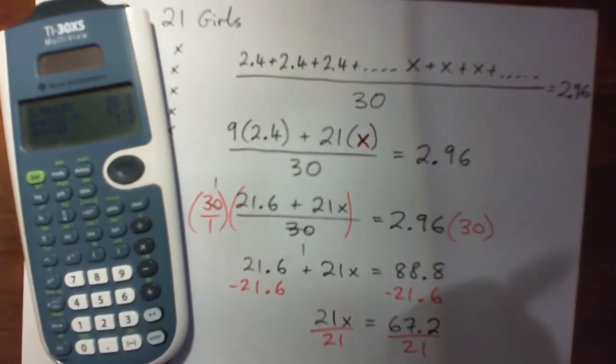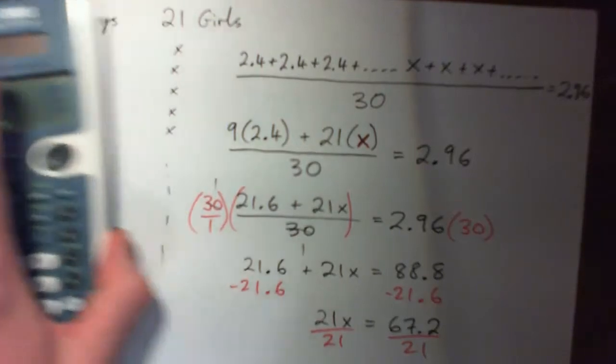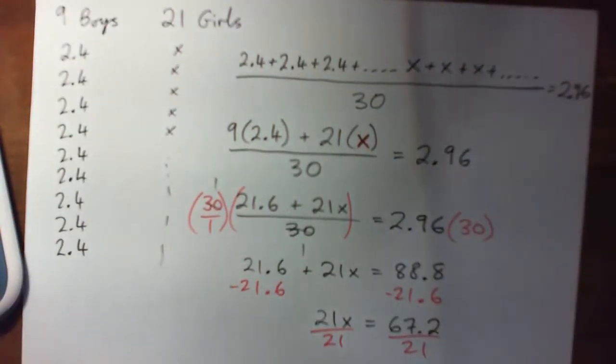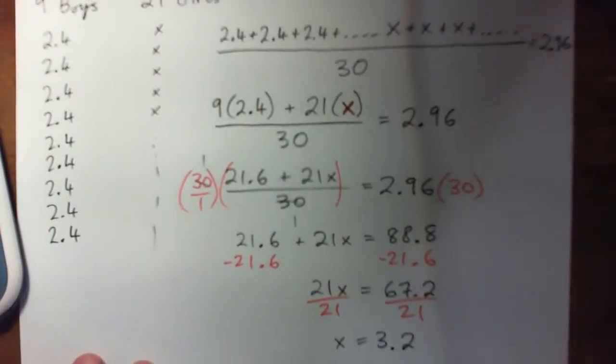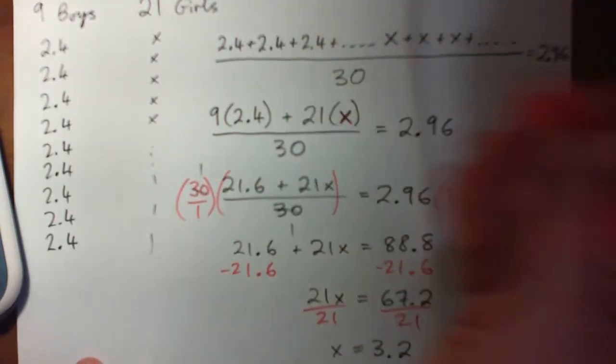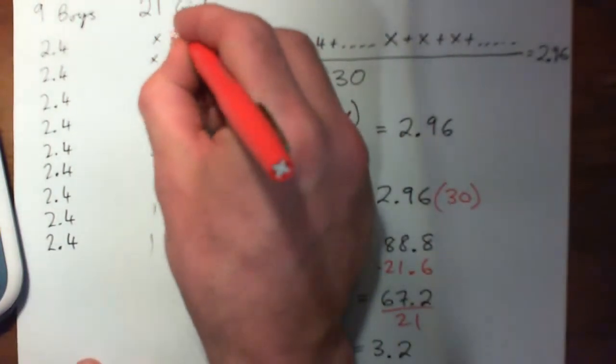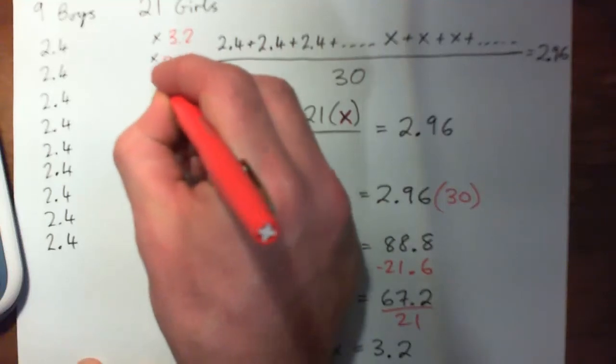And then divide both sides by 21, and we have X equals 3.2. So what we find is that if all the girls got 3.2, in other words the girls' average is 3.2, let's say they all got 3.2, then this whole thing would work out right.